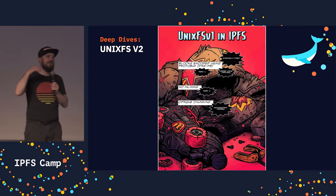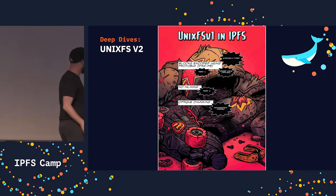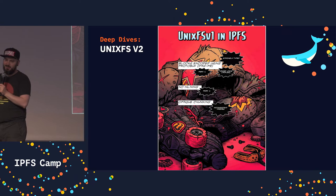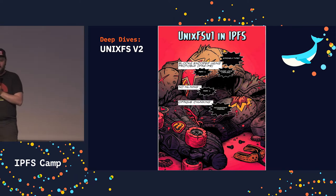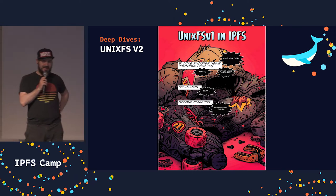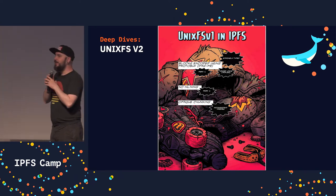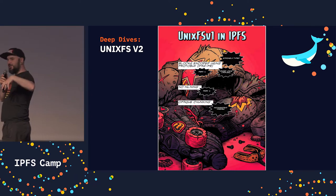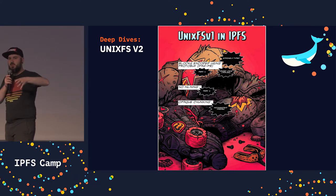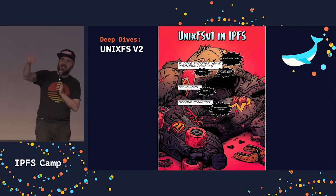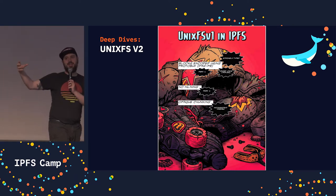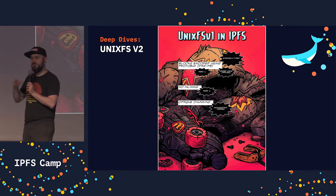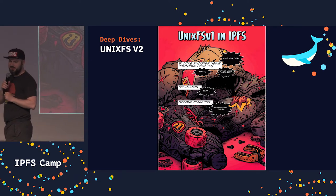The big one is that everything is in DAG PB, and for a variety of reasons we would love to move on to all these great new DAG formats, actually one called DAG CBOR. There's a very inflexible DAG structure for UnixFSv1, so if you have a bunch of tiny files and a tiny directory, you can't just inline all of that into one block — you end up with a lot of hops for a lot of tiny, tiny files.